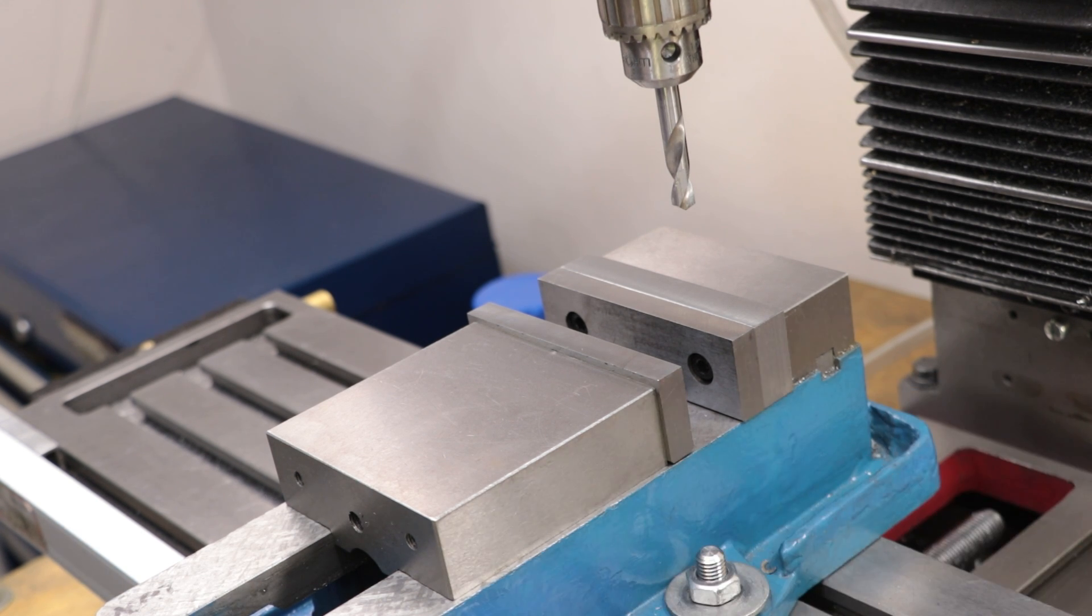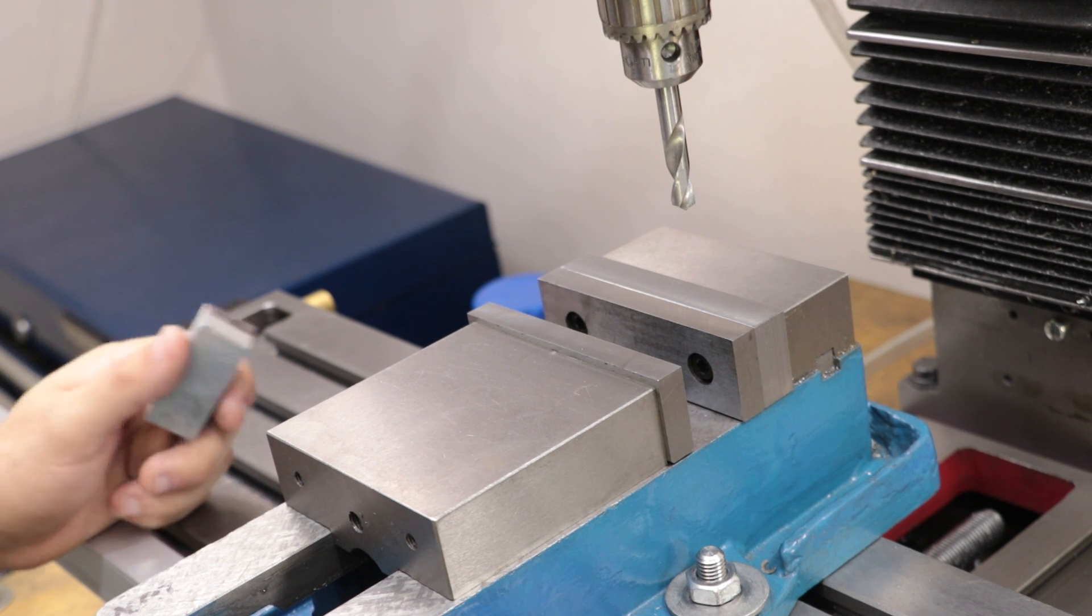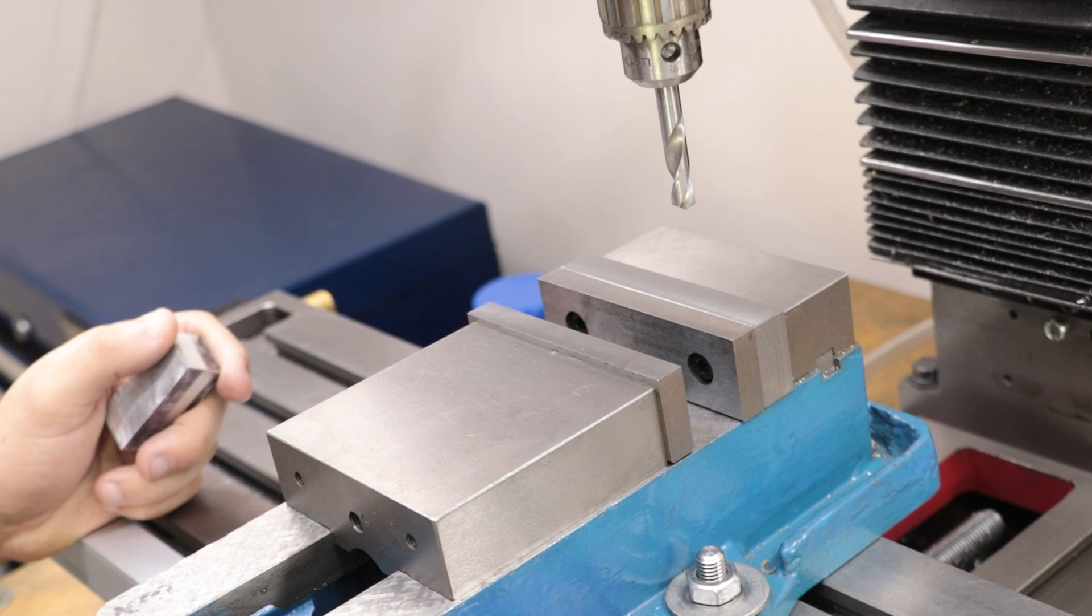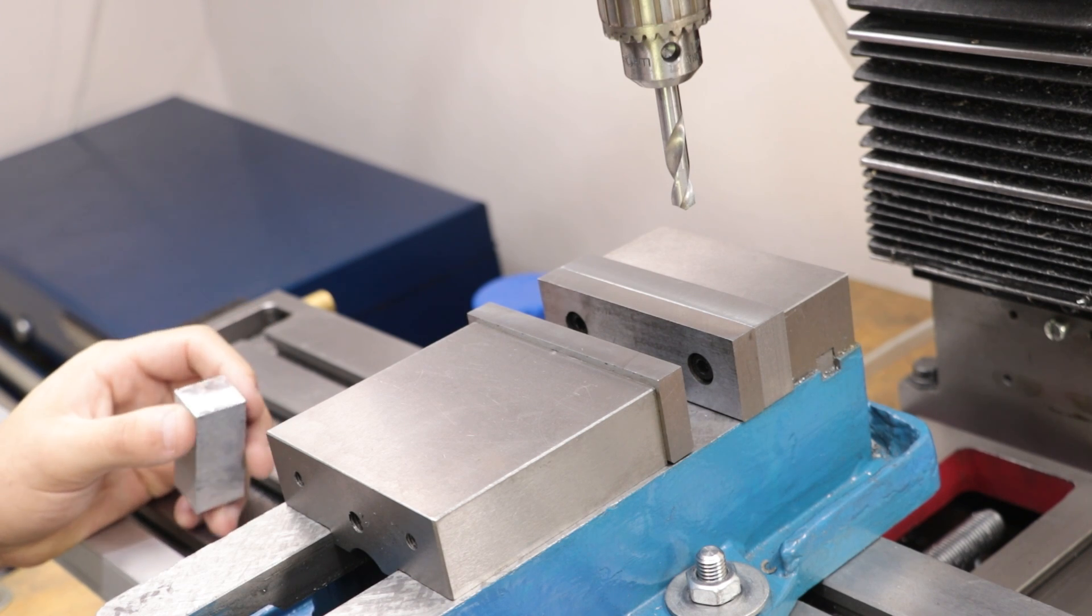They're pretty simple parts to make, and what they do more or less is add a stop to your vice. Let's say for example I wanted to machine this piece of aluminum.